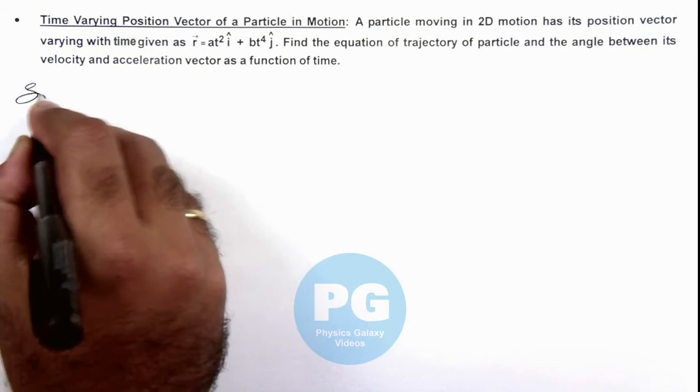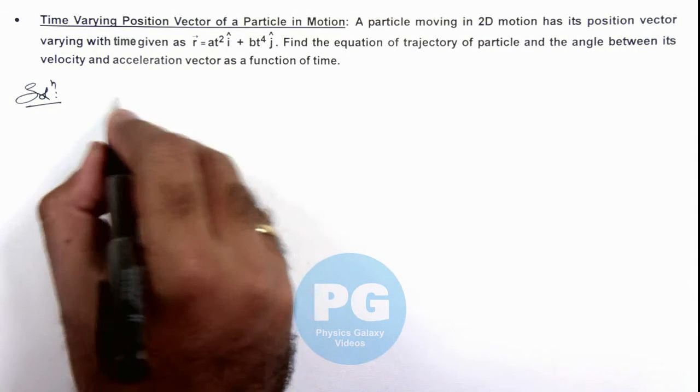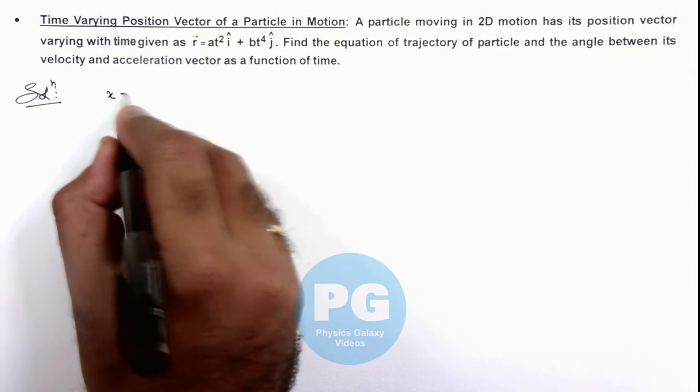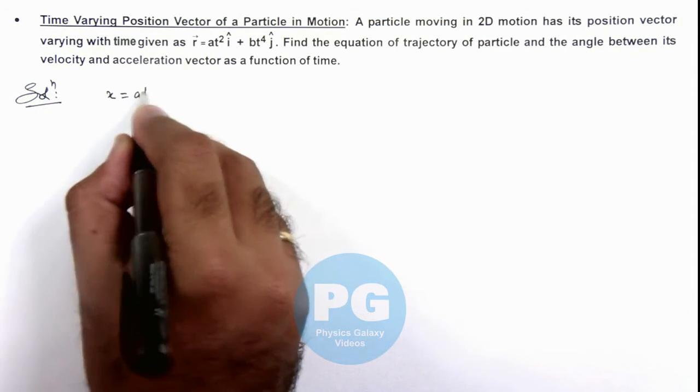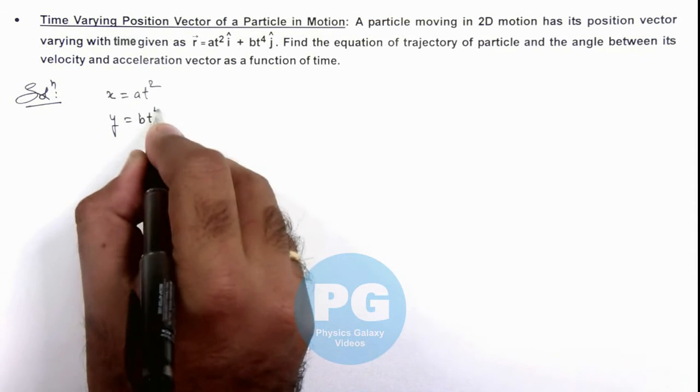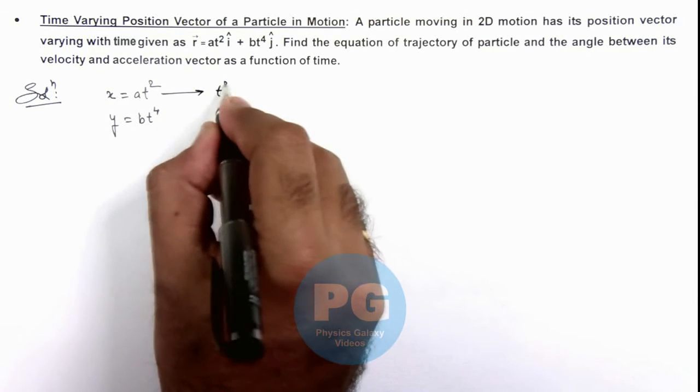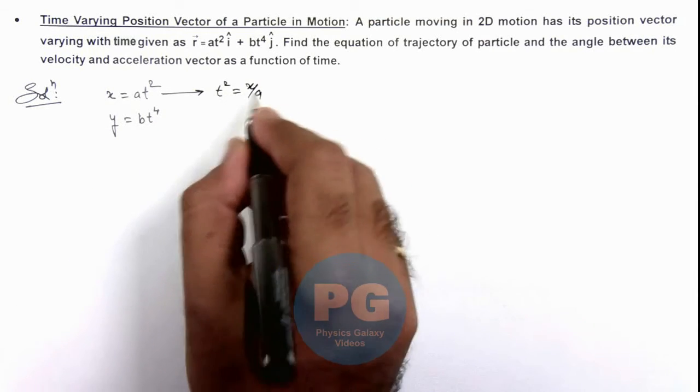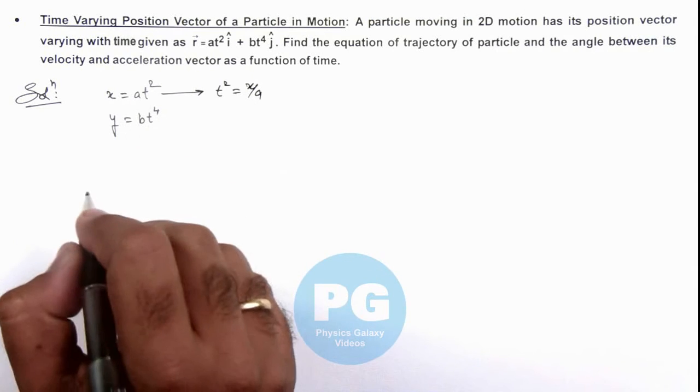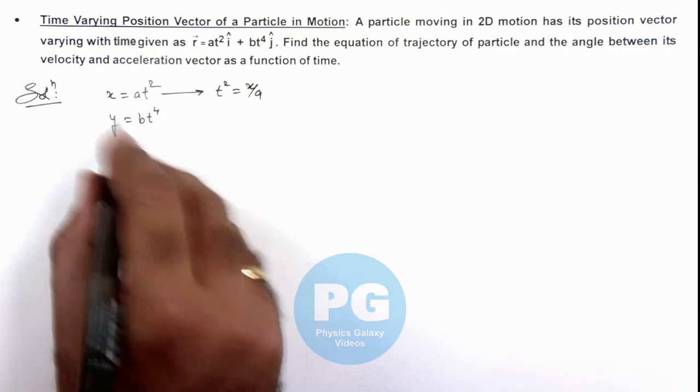Here, in this situation, we can write the x coordinate of the particle's trajectory would be at² and its y coordinate can be written as bt⁴. From this relation, we can see the value of t² is x/a. We eliminate t between the two coordinates, which are given as a function of time, to get the trajectory.